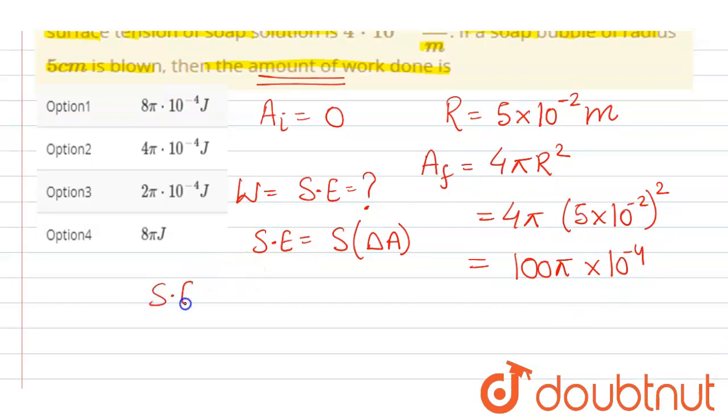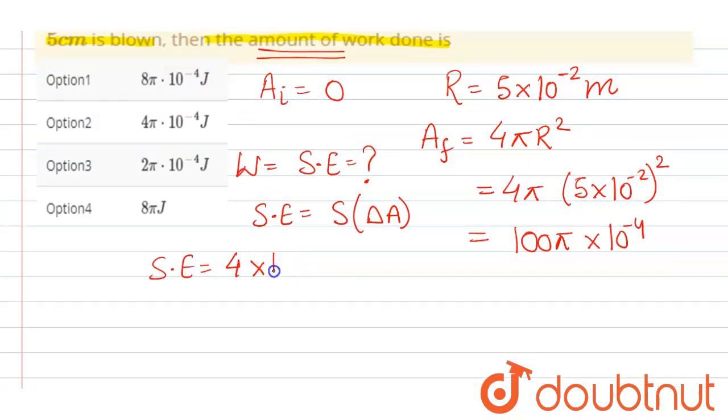Now surface energy will be equal to surface tension, that is 4 × 10^-2. And for change in area we multiply with 2, and final area that is 100π × 10^-4 minus initial area which is 0.